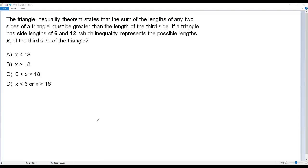If a triangle has side lengths of 6 and 12, which inequality represents the possible lengths of x of the third side of the triangle?